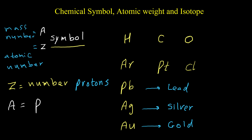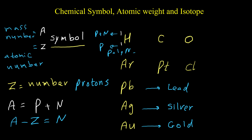For example, for hydrogen we have hydrogen-1-1. This number shows we have only one proton in the nucleus of the hydrogen atom. If we subtract A and Z we can find the number of neutrons. So for this hydrogen, A minus Z equals one minus one, giving one proton and zero neutrons.